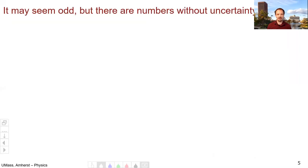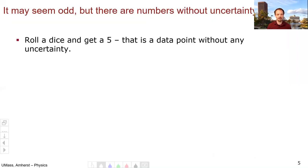Now, after all this discussion, it may seem odd, but there actually are numbers that don't have any uncertainty whatsoever. Roll a die, for example, and get a 5. That is a data point without any uncertainty.